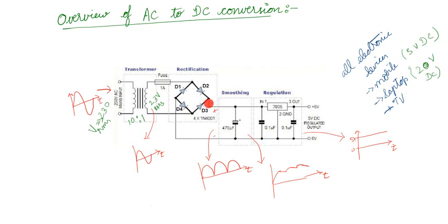This is your full wave rectifier using bridge type circuit — I will see this clearly in the coming slides. If you look at the output, we can see the alternating input is converted into a fully positive wave. That is what we call pulsating DC, or full wave rectified output. At this point we will have this waveform.